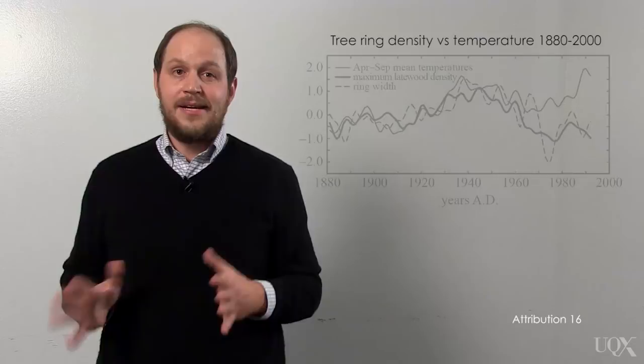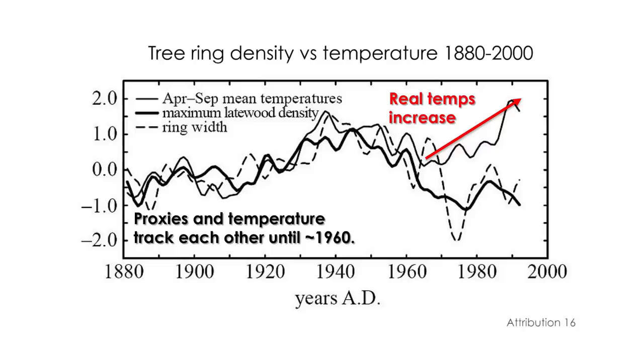Around 1960, however, some temperature proxies from tree growth stopped tracking temperature. The global temperatures went up, as evidenced by the thermometers, the weather balloons, satellites, and all those other indicators we talked about. But some tree proxies went down. And this is the decline mentioned in the email: a decline in the tree proxy data, not in the actual temperatures.